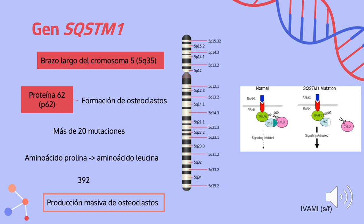El gen SQSTM1 está situado en el brazo largo del cromosoma 5, en la posición 5Q35. Este gen codifica la proteína 62, que promueve la formación de osteoclastos, que son células que participan en la resorción ósea. Se han identificado más de 20 mutaciones en este gen responsables de la enfermedad de Paget ósea; todas consisten en cambios en aminoácidos de la proteína 62. La mutación más frecuente reemplaza el aminoácido prolina por el aminoácido leucina en la posición 392 de la proteína. Mediante un mecanismo que aún no se entiende por completo, las mutaciones de ese gen parecen sobreactivar la vía de señalización química que promueve la formación de osteoclastos, lo que provoca una producción masiva de osteoclastos y desencadena estos para romper el hueso normal.